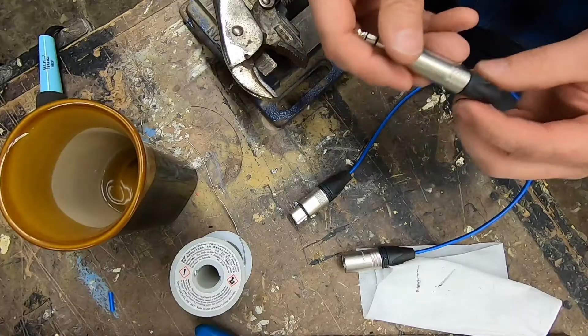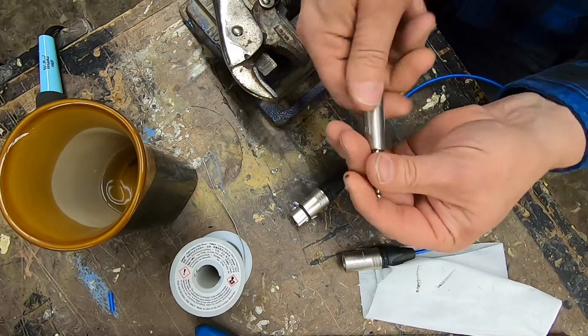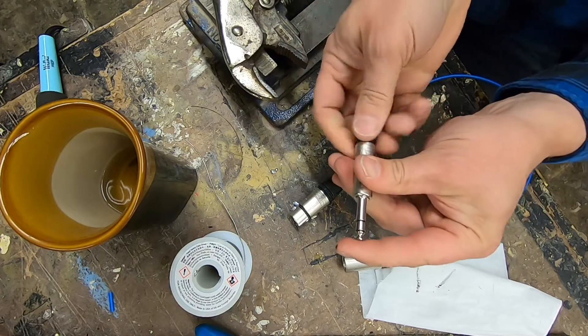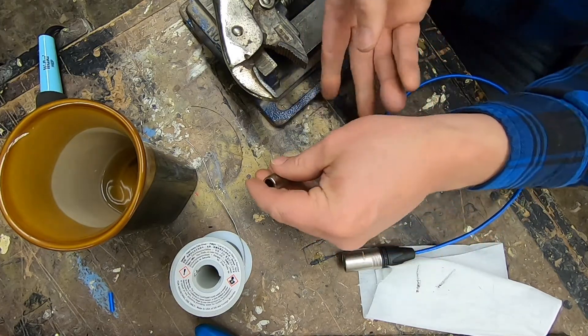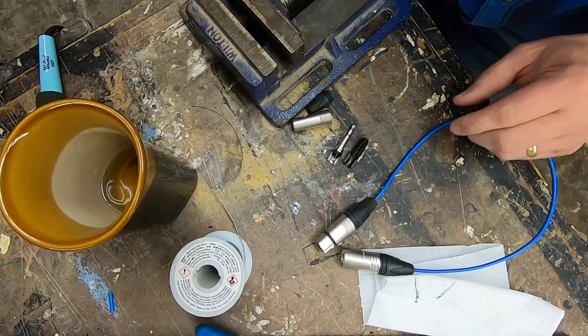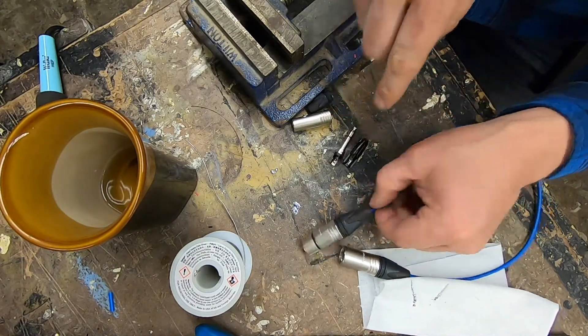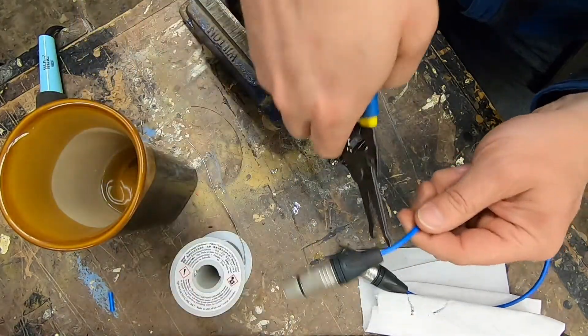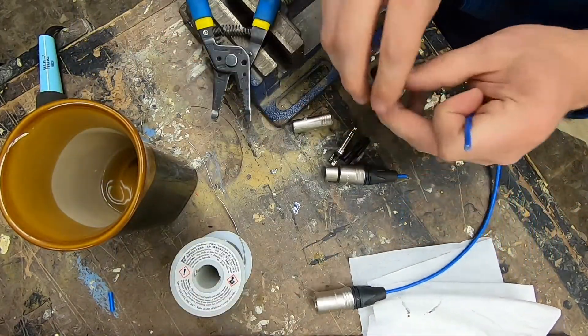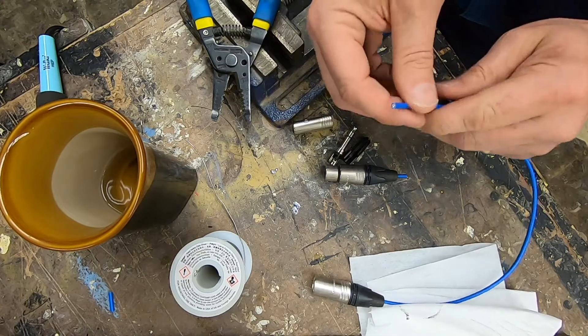Now let me show you how to solder on a quarter inch jack. Quarter inch jack, balanced. It has the same parts that the XLR did. We've got the bushing, the chuck, the insert, and then the housing.